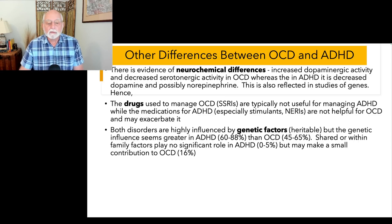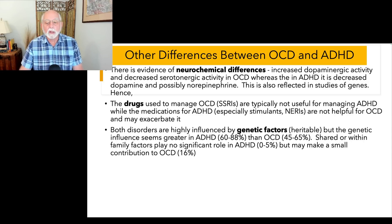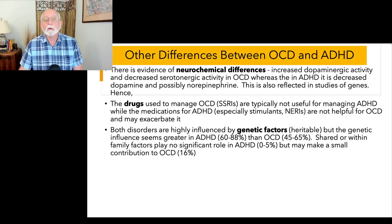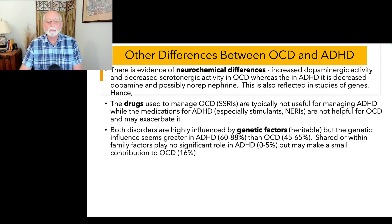From twin studies we can also look at within-family shared factors and non-shared unique events. In OCD, about 16% of variation can be related to within-family factors — perhaps neurotic habits among family members. In ADHD, there are no significant effects of within-family factors. Both have a small role for non-shared factors. The conclusion: both disorders are highly heritable, but ADHD is even more genetically influenced than OCD.